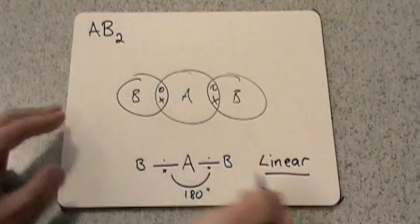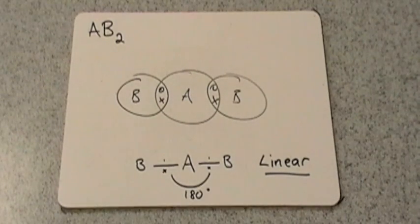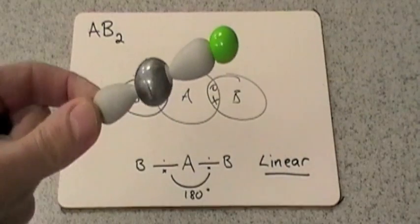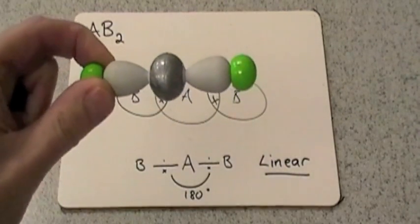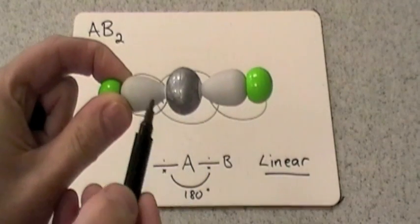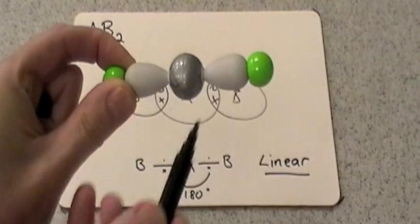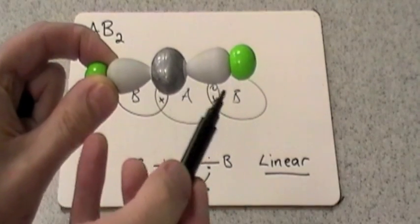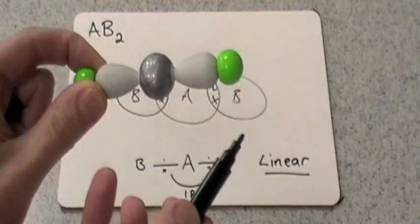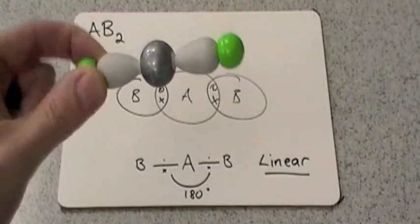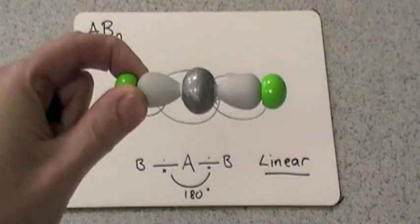This is a linear molecule and I've got a model of one here just to show you that. So we've got the central atom, these gray lobe-shaped pieces of plastic here represent the electron pairs, and there's the bonded atom at the end there. So there's your covalent bond and that would be the B in my example there. So that's what a linear molecule looks like - everything's in the same plane.